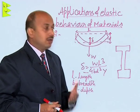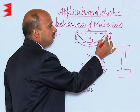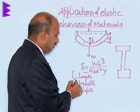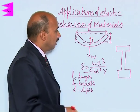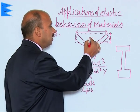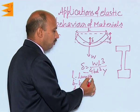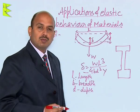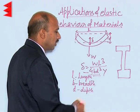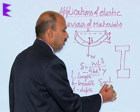For designing bridges, beams are used. Suppose a beam has parameters: length L, breadth B, and depth D. If a load W is hung, the depression in the beam is given by: delta = W L³ / (4 B D³ Y), where Y is Young's modulus. From this formula, it is clear that depression is inversely proportional to D³.